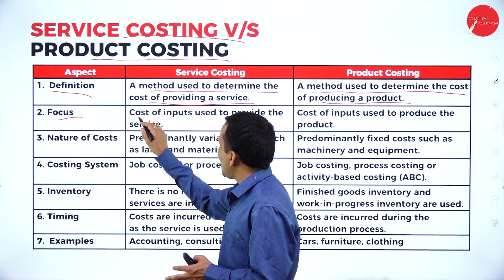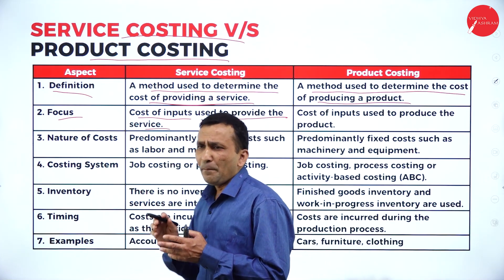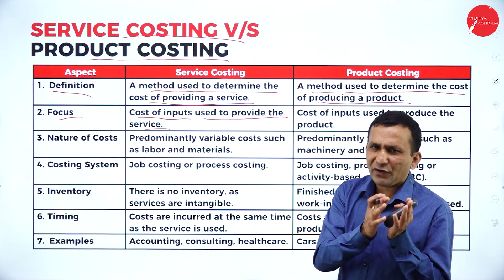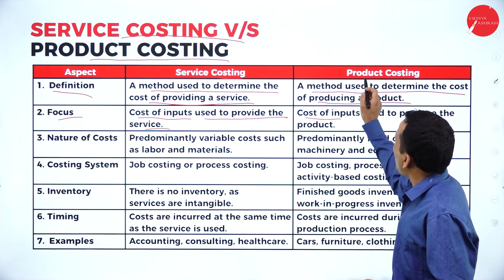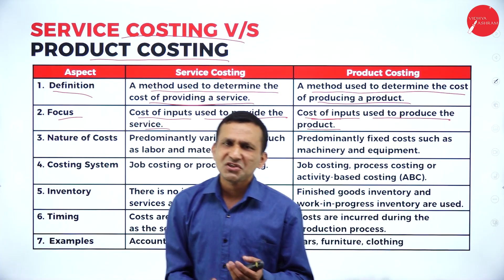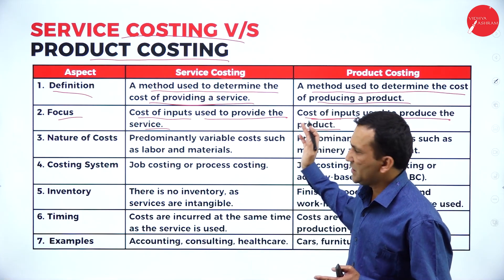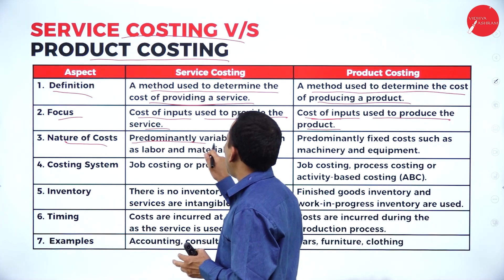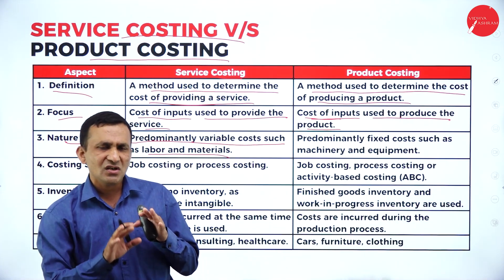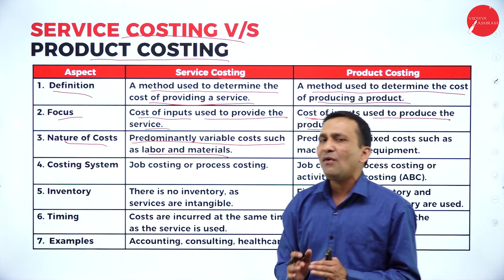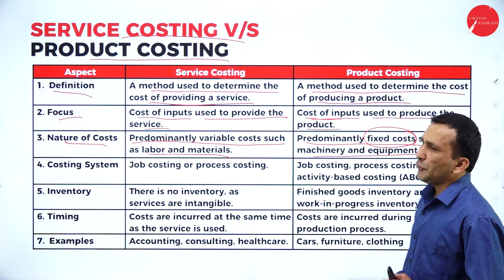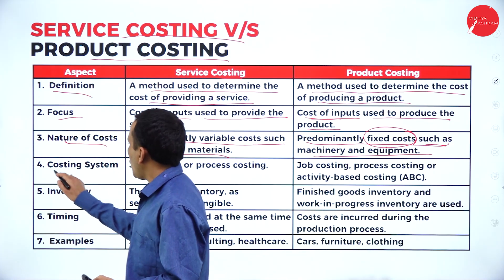The focus under service costing is the cost of inputs used to provide the service — what costs are incurred before offering a service. Under product costing, the focus is the cost of units used to produce the product: raw material cost, labor cost, machine cost. Regarding nature of cost — service costing has predominantly variable costs such as labor and materials, which vary each time a service is offered, while product costing has predominantly fixed costs such as machinery, equipment, and factory rent.